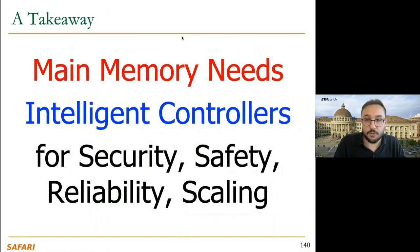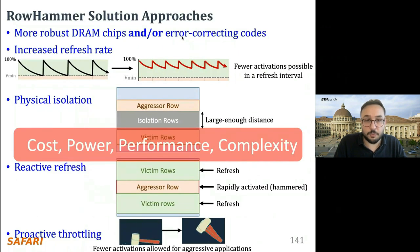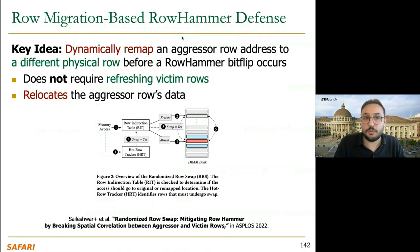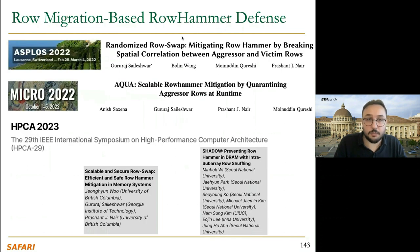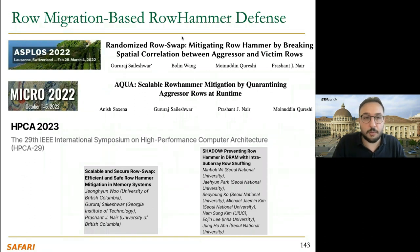Main memory needs intelligent controllers for security, safety, reliability, and scaling — and there is always room for improvement. In 2022, on top of all these RowHammer solution approaches, we started seeing a new approach based on row migration: dynamically remapping aggressor row addresses to a different physical row before a RowHammer bit-flip occurs. This method does not require refreshing victim rows but relocates the aggressor row's data. We are not the only group working on RowHammer — there are many other groups and papers coming up.